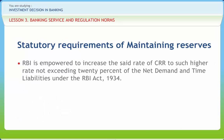RBI is empowered to increase the rate of CRR to such higher rate not exceeding 20% of the net demand and time liabilities under the RBI Act 1934. CRR on 31st March 2009 was 5.75%. In terms of Section 42.1 of the RBI Act 1934, Scheduled Commercial Banks are required to maintain, in addition to the balances prescribed under Section 42.1, an additional average daily balance — the amount of which shall not be less than the rate specified by the RBI in the notification published in the Gazette of India — such additional balance being calculated with reference to the excess of the total NDTL of the bank as shown in the return referred to in Section 42.2 of the RBI Act 1934 over the total of its NDTL at the close of business on the date specified in the notification.